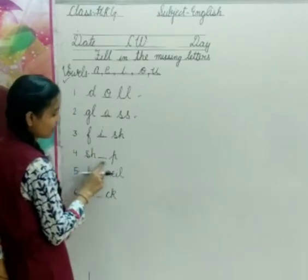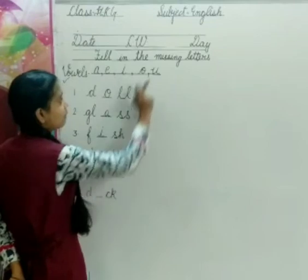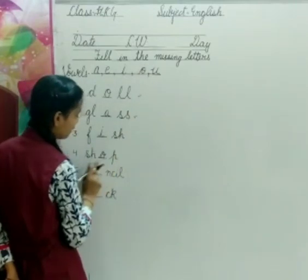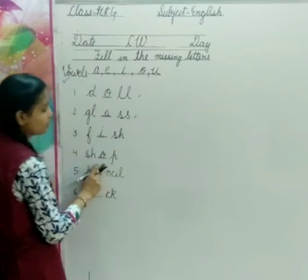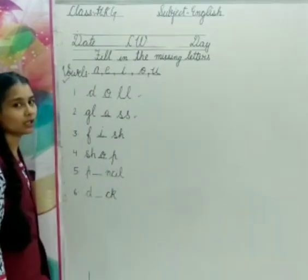Now fourth, S-H dash P. S-H dash P. Yeh kya word hua? We fill it O. Hamein yahan pe O likhenge, aur hamara word ready ho jayega, complete ho jayega. That is shop. Okay, so yeh stop kya aana chahiye.